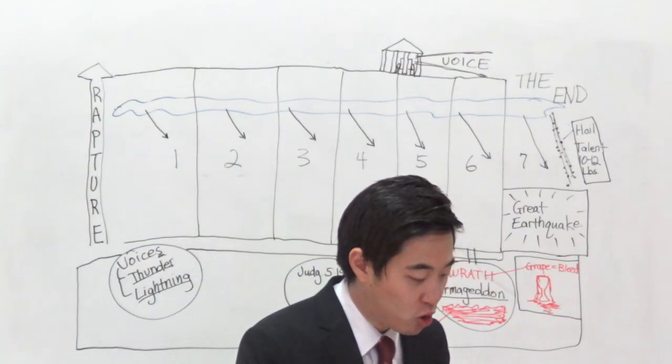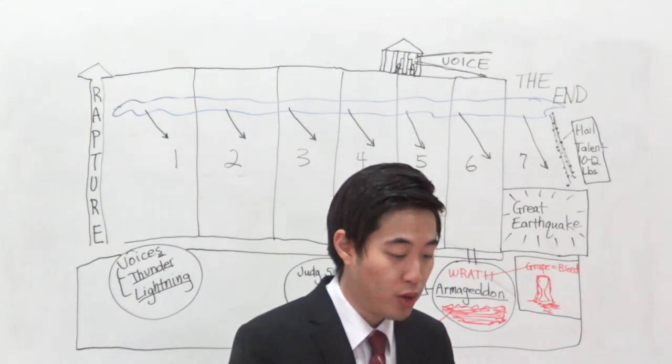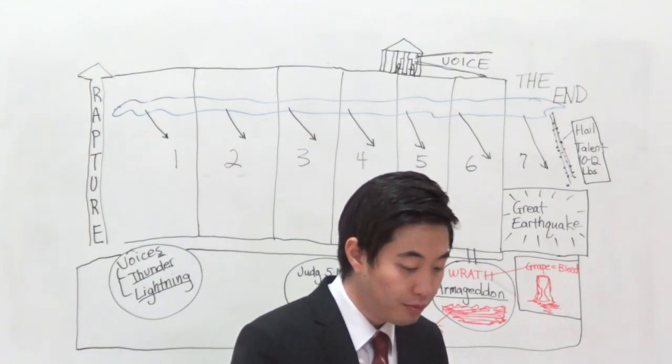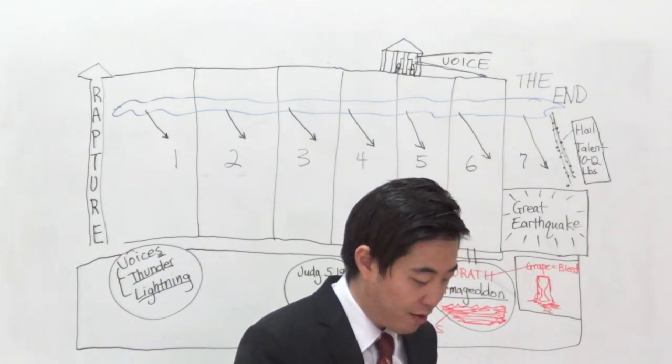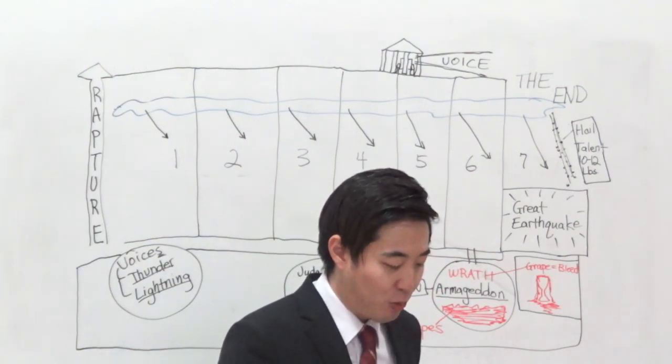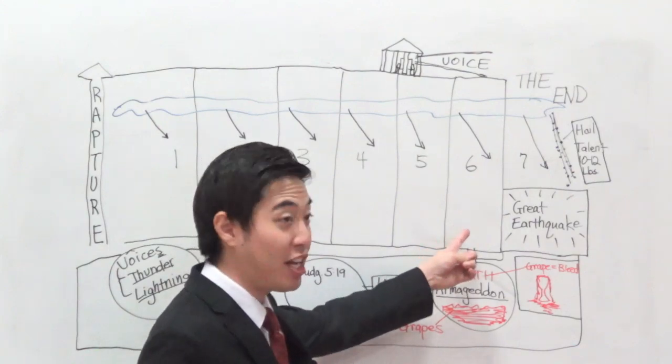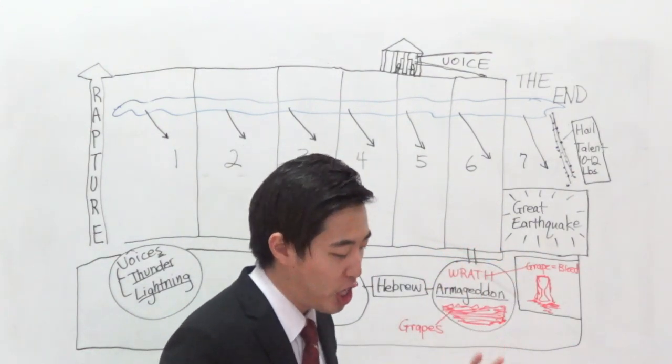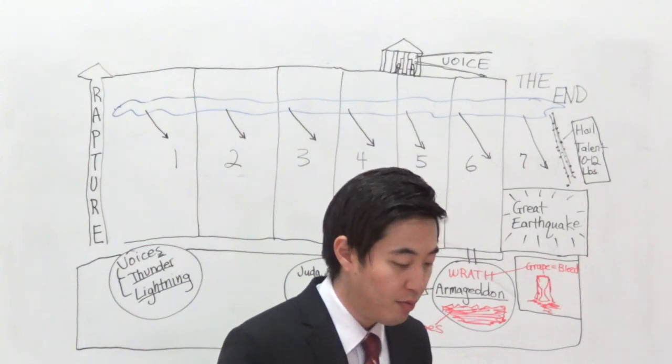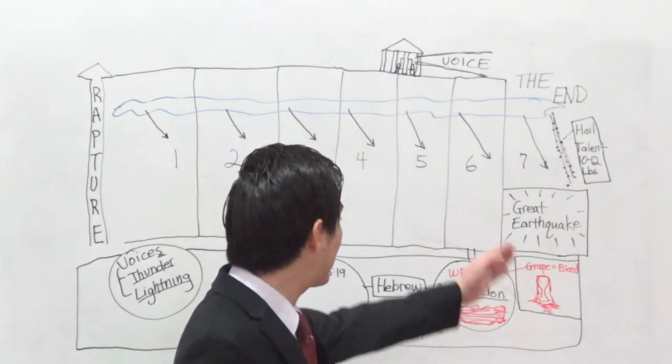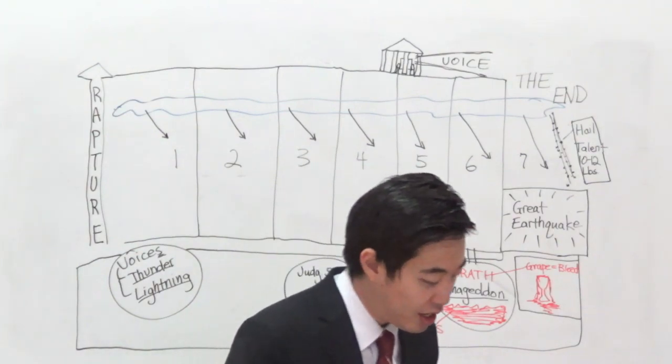Another one is 2 Kings chapter 23, verse 29. In his days, the Pharaoh Necho, king of Egypt, went up against the king of Assyria to the river Euphrates. Now, remember, Armageddon is by Euphrates at Revelation 16, right? So we know the geography here. And King Josiah went against him, and he slew him at Megiddo. So it's going to be by the location of Euphrates. That's why God drives up the river Euphrates, so that they can meet at Armageddon.